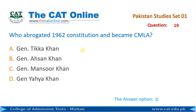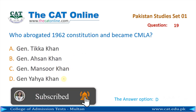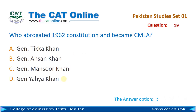Question number 19: Who abrogated the 1962 constitution and became CMLA? The correct answer is D — General Yahya Khan.